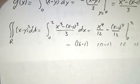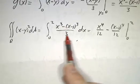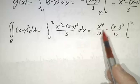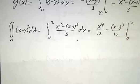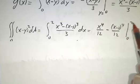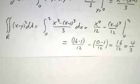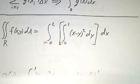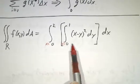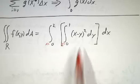Then we integrate that result over x from 0 to 2. We integrate x minus 1/3 dx, which gives x²/2 minus x/3, evaluated from 0 to 2. After plugging in the values, we get our answer. So this double integral of x minus y squared over the rectangle equals 4/3, because we did it one variable at a time — integrating over y to get the contribution of each column, then integrating over x to put all the columns together.